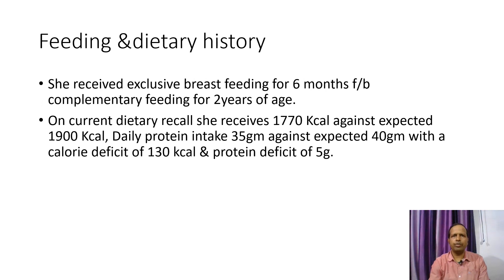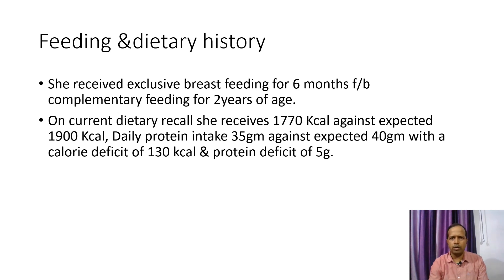Feeding and dietary history: She received exclusive breastfeeding for 6 months followed by complementary feeding up to 2 years of age. On current dietary recall, she receives 1,770 kcal against an expected 1,900 kcal. Her daily protein intake is 35 grams against an expected 40 grams, with a calorie deficit of 130 kcal and a protein deficit of 5 grams.